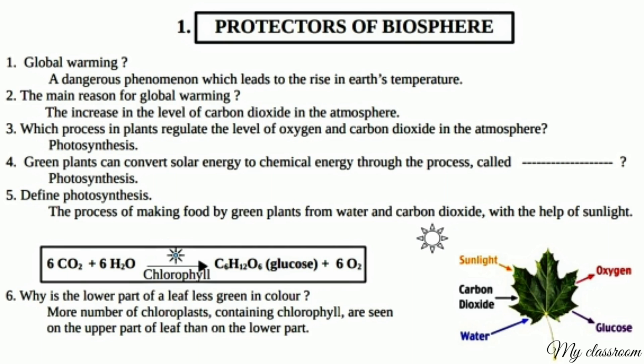Which process in plants regulates the level of oxygen and carbon dioxide in the atmosphere? Photosynthesis. Green plants can convert solar energy to chemical energy through the process called Photosynthesis.